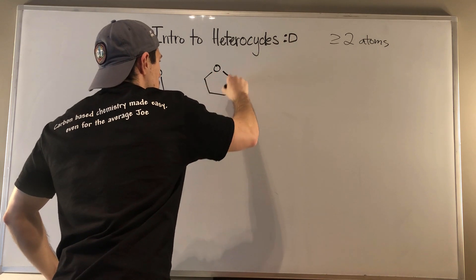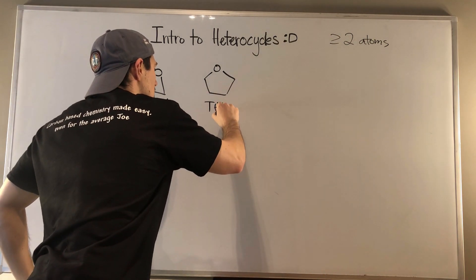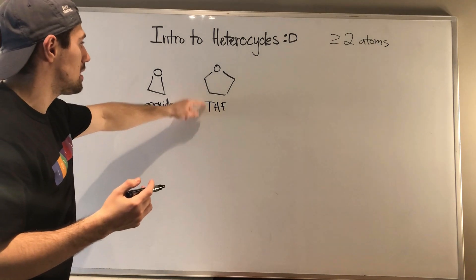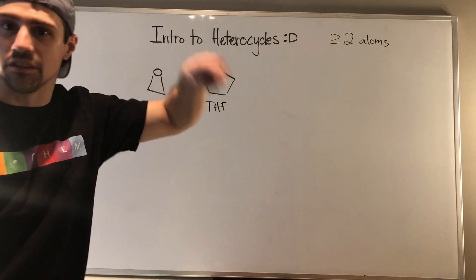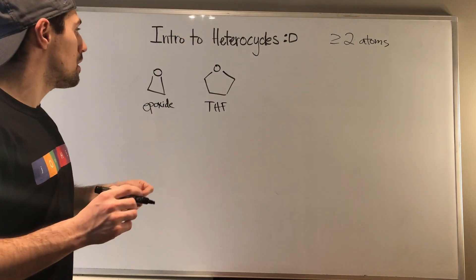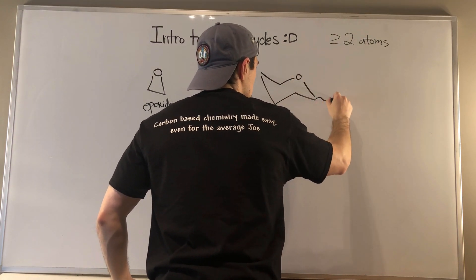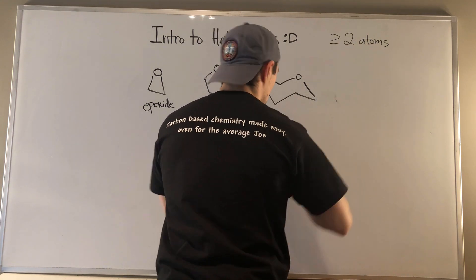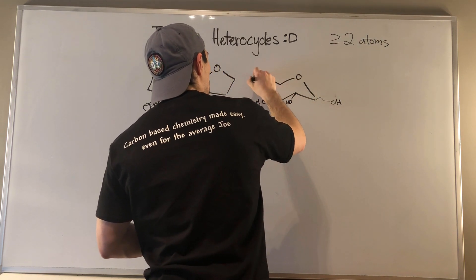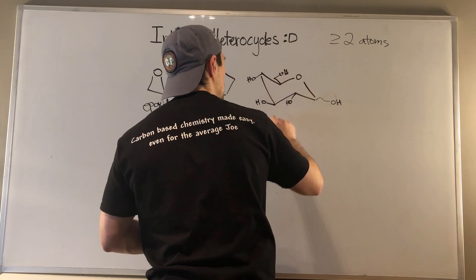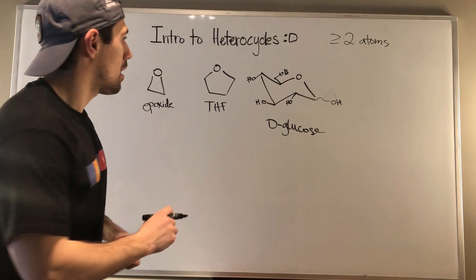Even if you might not know the structure, if we look at this five-membered ring with oxygen embedded in the ring, this is THF — tetrahydrofuran. 'Tetra' meaning four carbons, 'hydro,' and 'furan' means oxygen in the ring, a cyclic oxygen-containing ring. Throwback to our carbohydrate days — if we look at D-glucose, that's a heterocycle.